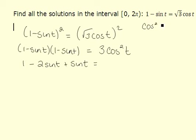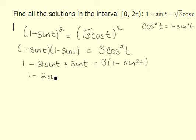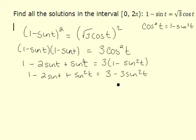We know that cosine squared t is equal to 1 minus sine squared t using the Pythagorean identity. Therefore, we have 3 times 1 minus sine squared t. Distributing that 3 through the parentheses, we would have 3 minus 3 sine squared t. Therefore, bringing everything over to one side, adding 3 sine squared t gives us 4 sine squared t minus 2 sine t.